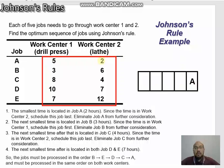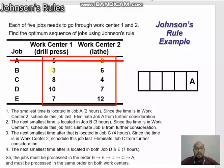Next, we eliminate job A and repeat the second step to find the smallest time. From the remaining times, the smallest is three hours for job B. Since the three hours is located at work center one, we schedule job B first.